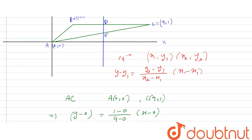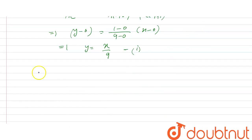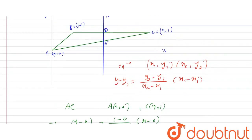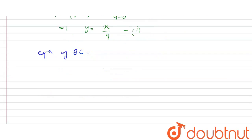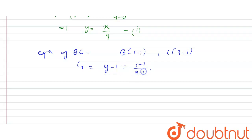Now we will find the equation of line BC. BC passes through B which is (1,1) and C which is (9,1). So the equation will be y minus 1 equals (1 minus 1) upon (9 minus 1) into (x minus 1), which gives y minus 1 equals 0, so y equals 1. Let this be the second equation.